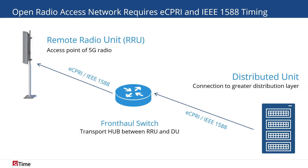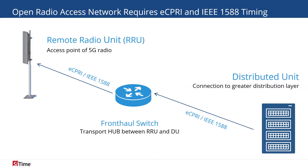ORAN consists of three major components: the remote radio unit, the front-haul switch, and the distributed unit. The RRU is the access point that the user connects to, and it is connected to the distributed unit via the front-haul switch. The distributed unit is the interface between the access network and the network core.